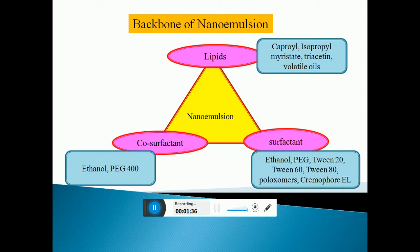Coming to the backbone of the Nano Emulsion system, this comprises of lipid, co-surfactant, and surfactant. In case of lipids, Capryl-90, isopropyl myristate, diacetin, and many other oils can be used as a lipid component.